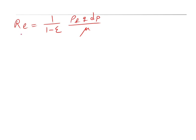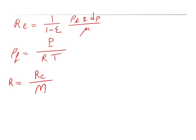To calculate the Reynolds number, you need the density of the fluid. Since you are working with air, you can assume it behaves as an ideal gas. So you can use the ideal gas law to calculate the density: ρ_f = P / (R × T), where R is the specific gas constant equal to the universal gas constant divided by the molecular weight.